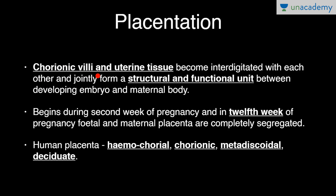Chorionic villi form the fetal placenta and uterine tissue forms the maternal placenta — it is a structural and functional unit between embryo and mother. Placentation begins during the second week of pregnancy, and by the twelfth week fetal and maternal placenta are completely segregated. Human placenta is hemochorial, meaning there are no placental barriers from the maternal side and three barriers from the fetal side. It is chorionic, derived from the chorion layer; metadiscoidal, first diffuse then becoming discoidal; and deciduate, meaning the attachment between fetal and maternal placenta is strong.